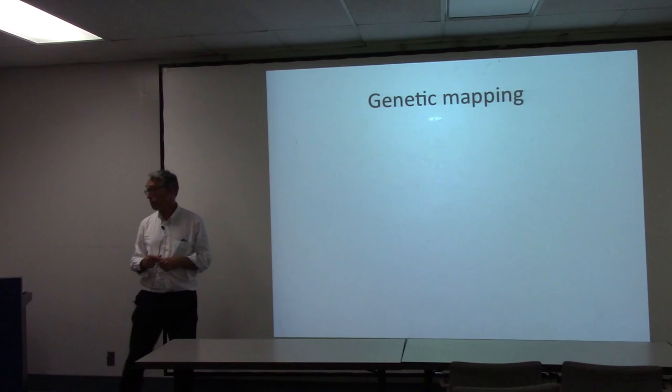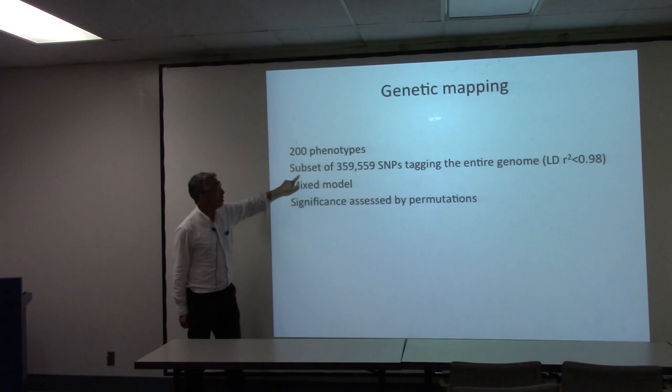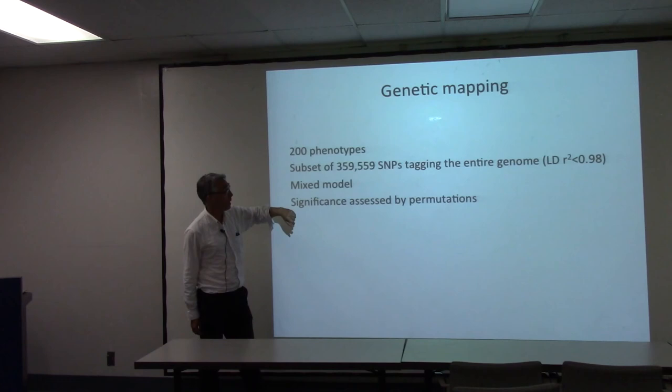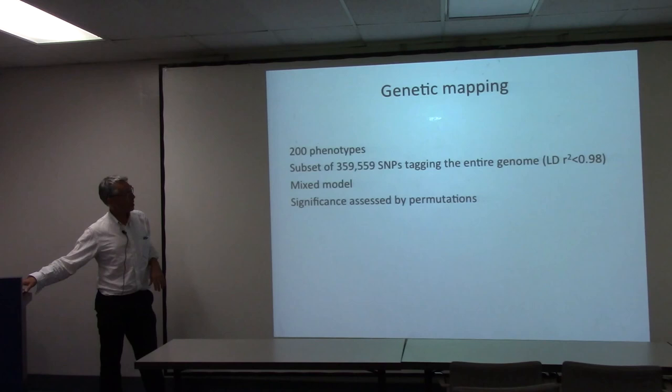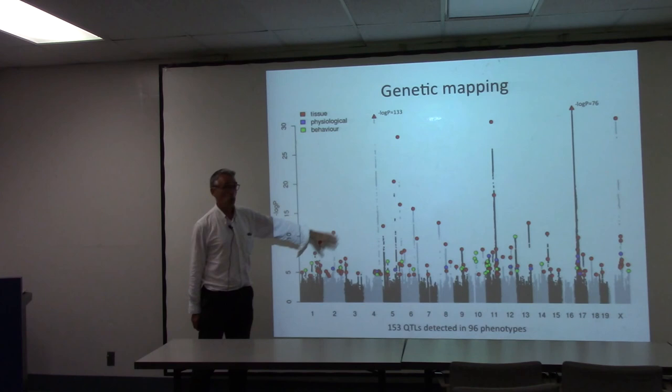Finally, let's turn to the genetic mapping. We have about 200 phenotypes, used about 360,000 SNPs — a small fraction of the 5.7 million, but enough to capture almost all information in the genome. We use a mixed model to control population structure, and assess significance by permutations. And now for my next slide, I will show you what we call, grandly, a porcupine plot — all 200 phenotypes mapped out on one graph.